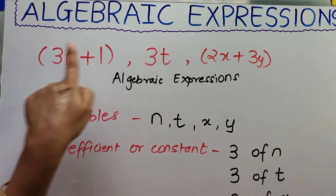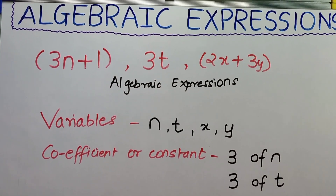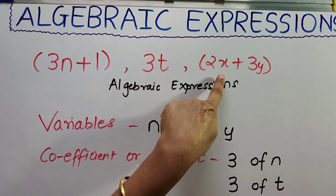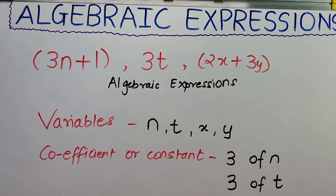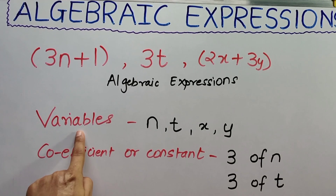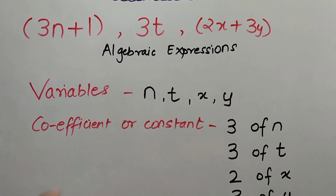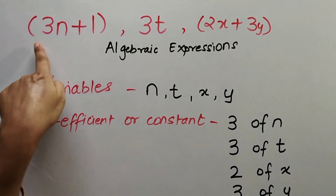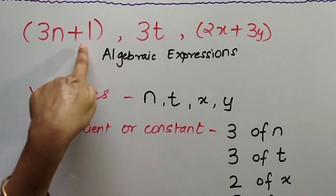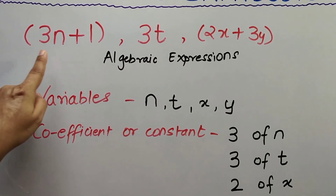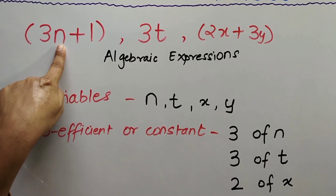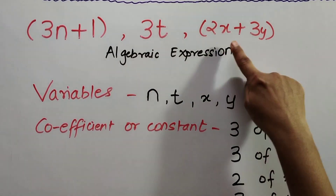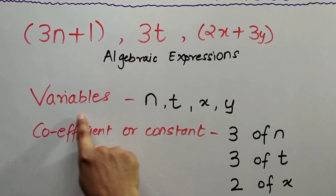Let us first see what are Algebraic Expressions. These expressions are known as Algebraic Expressions. They always carry a variable and a coefficient with them. Now, what are variables? In this expression, n is the variable. In this expression, t is the variable. In this expression, x and y are the variables.